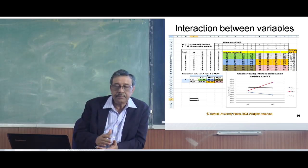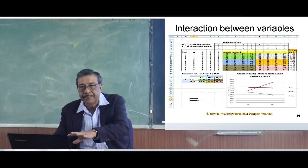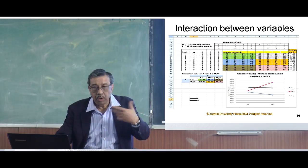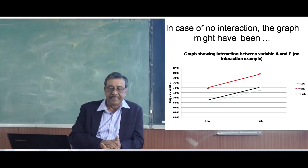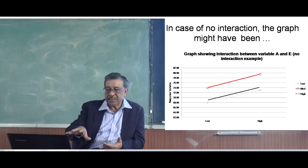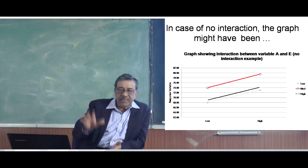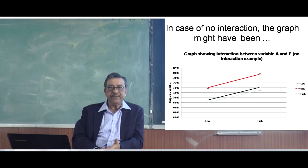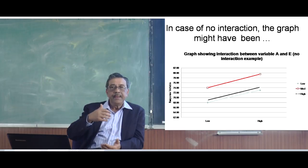Just to give an idea of what the graph looks like when there is no interaction — this is a hypothetical example, not the result of this experiment. When two variables do not interact, the graph shows parallel lines. This contrasts with the earlier graph that showed interaction. By carrying out this kind of experiment we are in a position to find out which variables are interacting with each other, which are not, and which is the optimal combination of variables likely to give the optimal result.